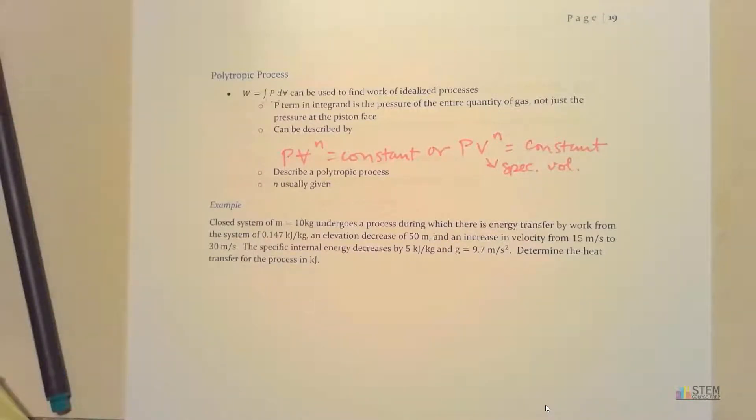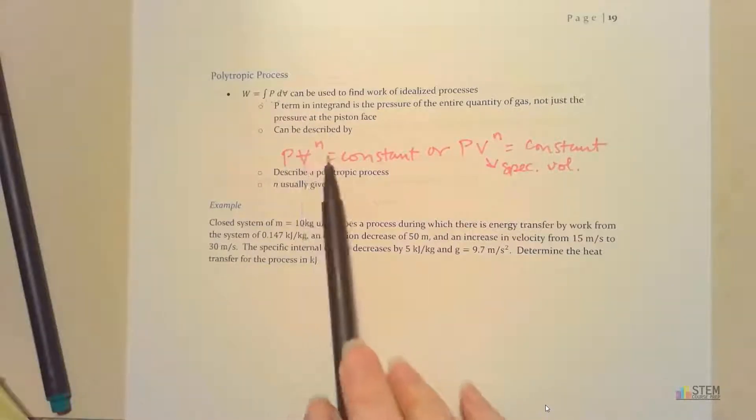And n is usually going to be given. So essentially, this type of process, if you see that equation, that's just kind of an idealized process where you're assuming that that P is the pressure of all of the gas, not just the pressure at the piston face. So that's all it is. I just want to point out that this n here is usually going to be given to you. And if you see that, you've got an idealized process.